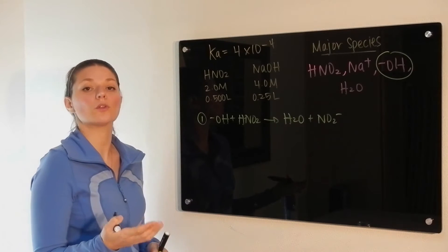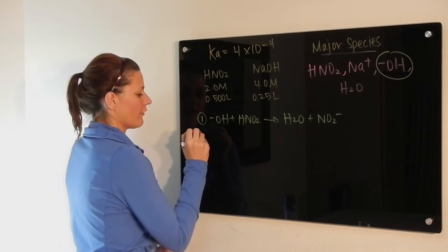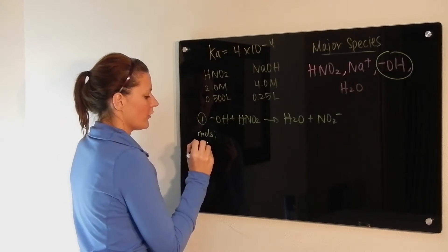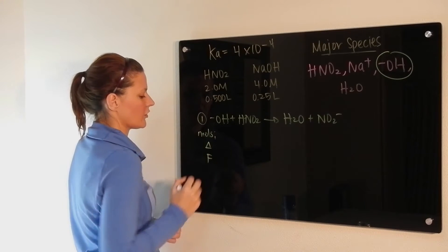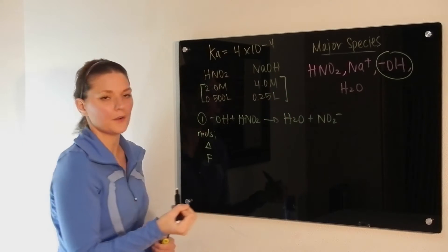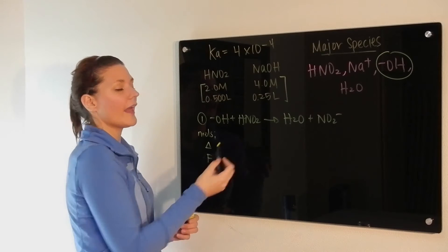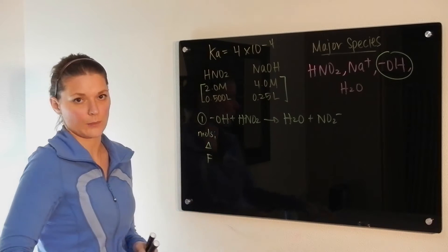Once again, it's completion, which means stoichiometry, so we're in terms of moles. So we're going to have our initial moles here, the change, and the final conditions. Using this information here and this information here, we will determine how many moles of hydroxide we begin with and how many moles of nitrous acid we begin with.